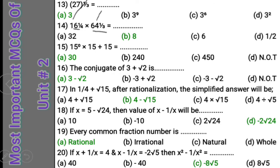Question 15: 15 power 0 into 15 plus 15. First evaluate the power: any number with power 0 equals 1, so 15 power 0 equals 1. Then 1 into 15 equals 15. Finally 15 plus 15 equals 30. The answer is 30.